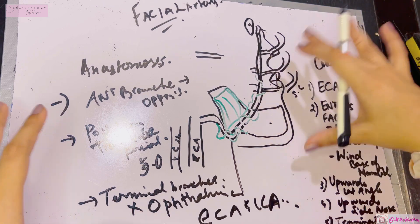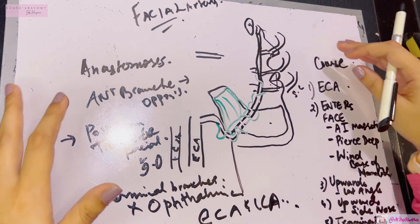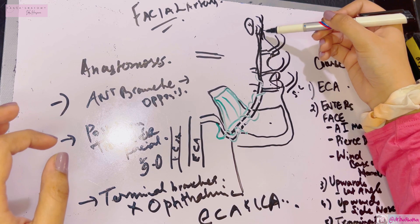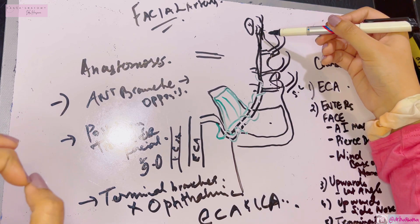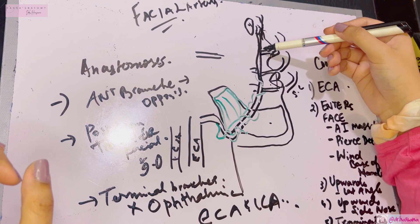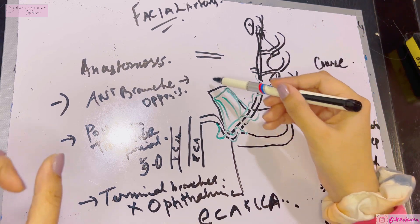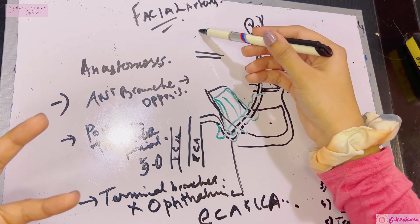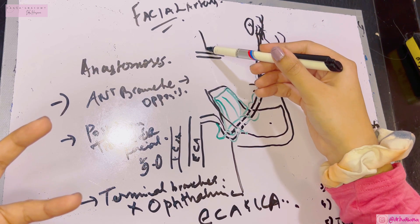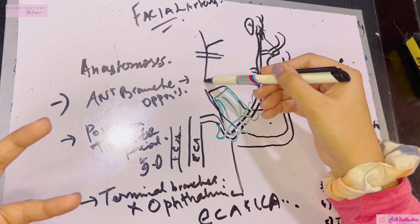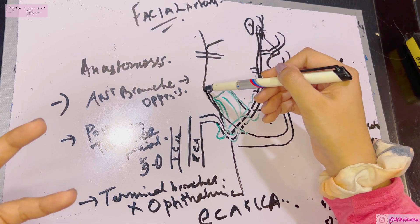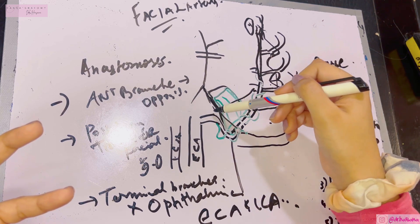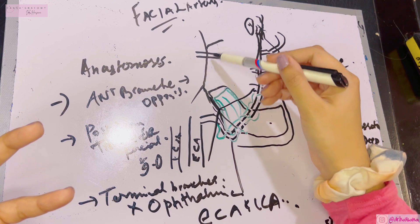Regarding the facial venous system, as discussed in the scalp video, the supratrochlear and supraorbital veins form the facial vein. The facial vein runs behind the facial artery, passes down across the angles of the face, and joins the anterior division of the retromandibular vein. The retromandibular vein is formed by the superficial temporal vein mixing with the maxillary vein. Its anterior division joins the facial vein, and together they drain into the internal jugular vein.